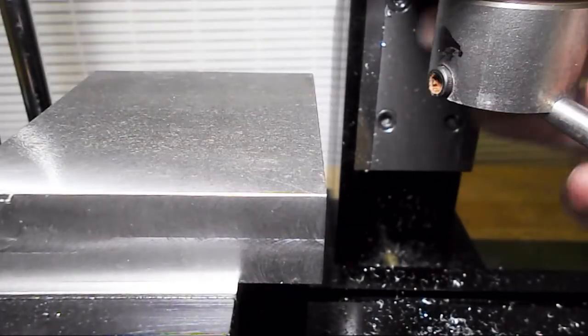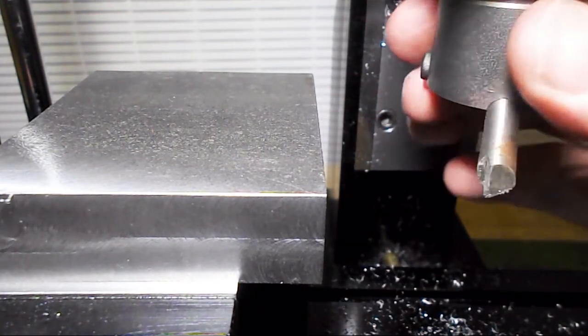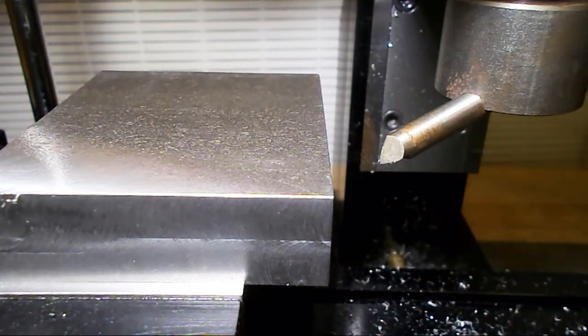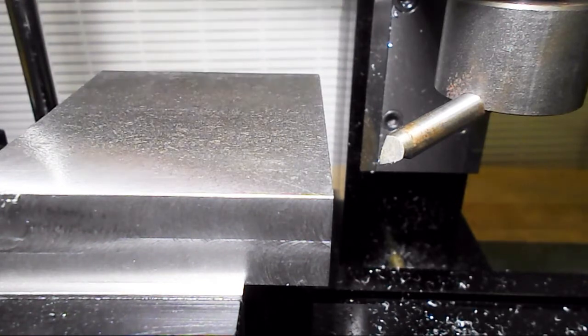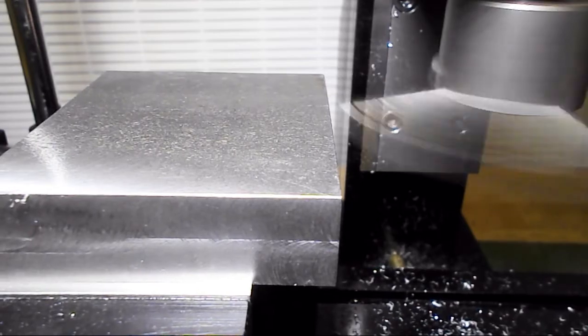Here I have the fly cutter set up. I already have the height set and I took a skim cut across, but I'm going to take another light pass here and see how we can do. It should be about five thousandths. See how it handles it.